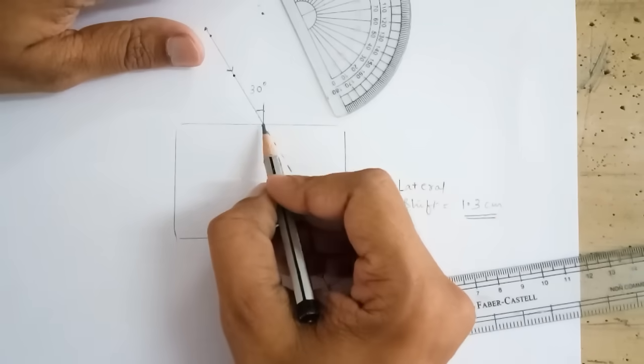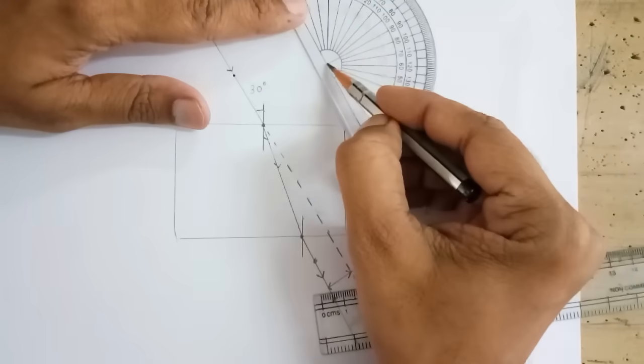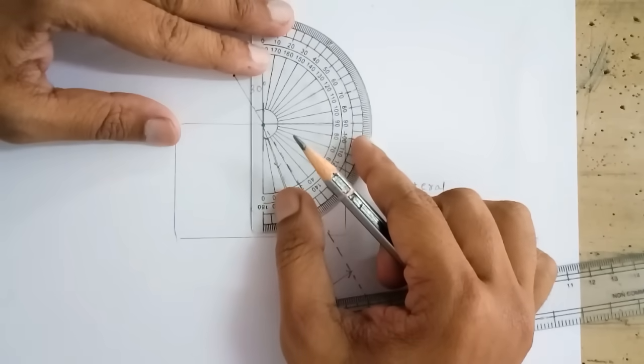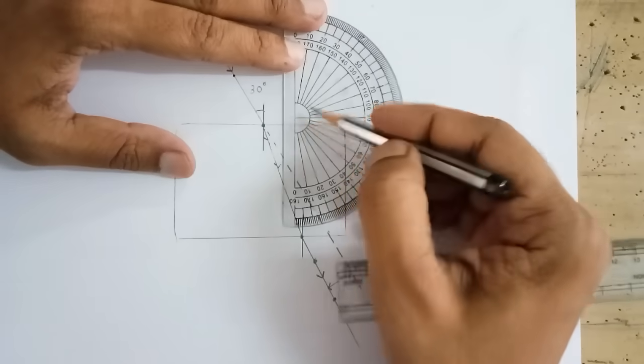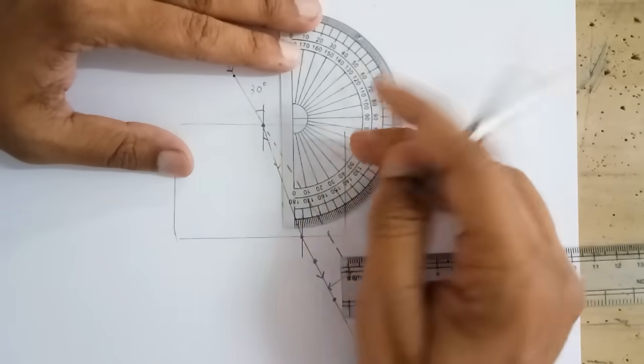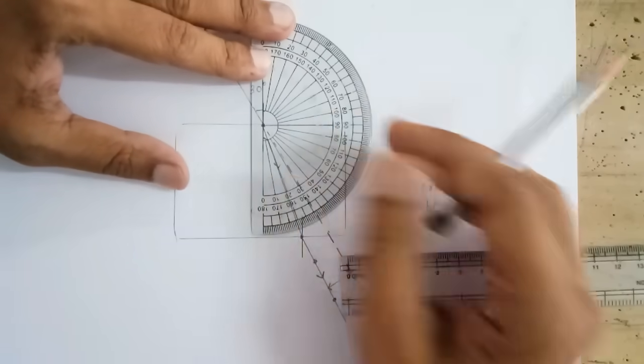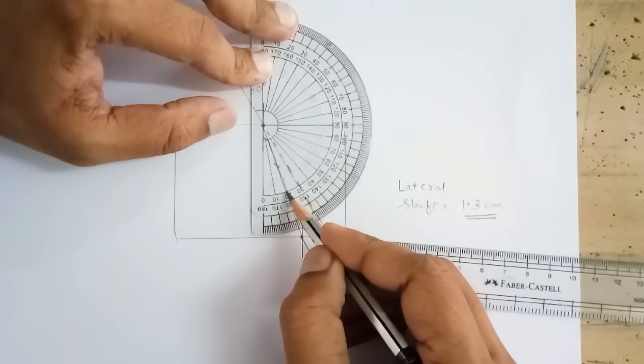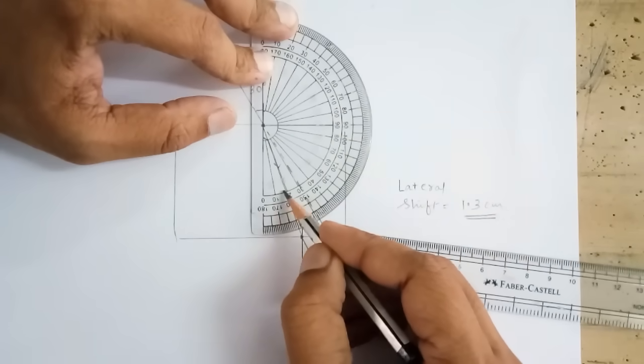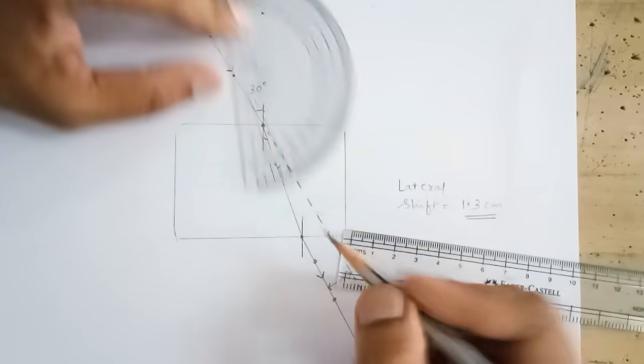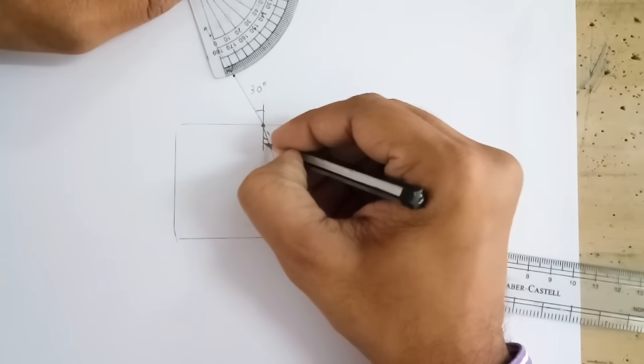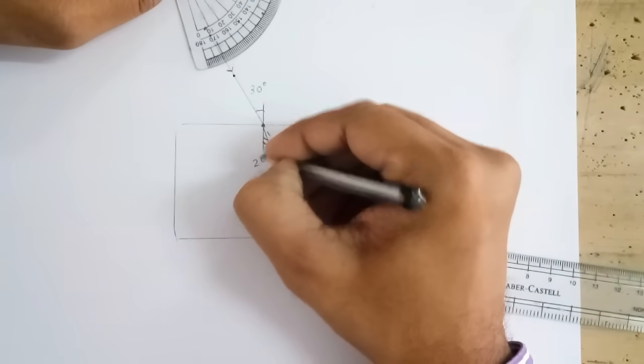So, here is the point where I am going to put this point of my protractor like this and this line should be matching with my normal. Okay now this angle is 20 degree you can see that. So, this angle is 20 degree and now I am getting this angle as 20 degree.